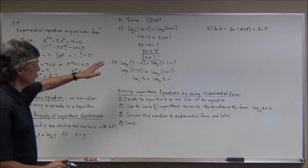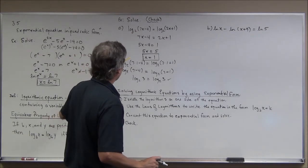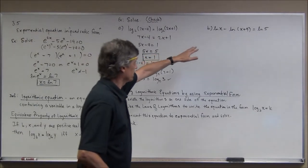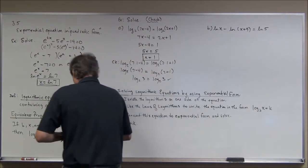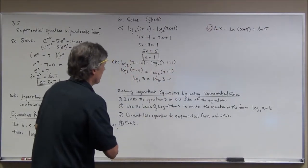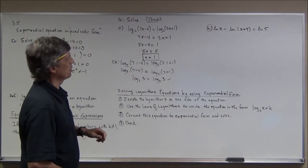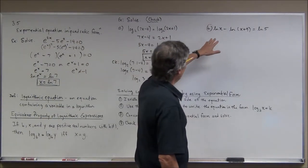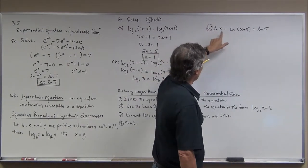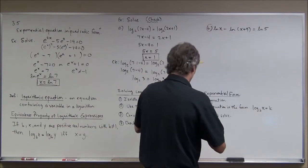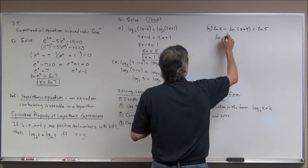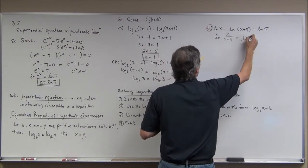So notice here, because this problem was so nicely set up, all I had to do was apply this property, I could get an equation much simpler to solve. And I don't have quite that nice a setup here. What I'm going to do in this case is, now everything's a natural log, that part's good, but what I'm going to do is I'm going to use my properties or my laws of logarithms to rewrite this as the natural log of x divided by x plus 9 is equal to the natural log of 5.